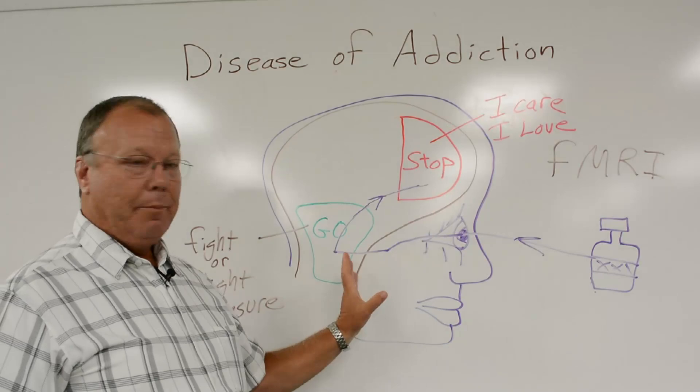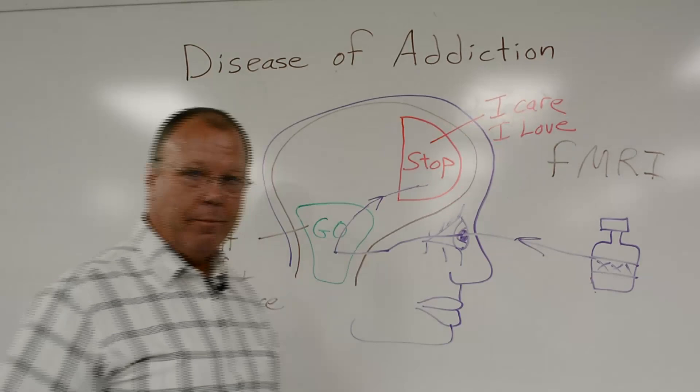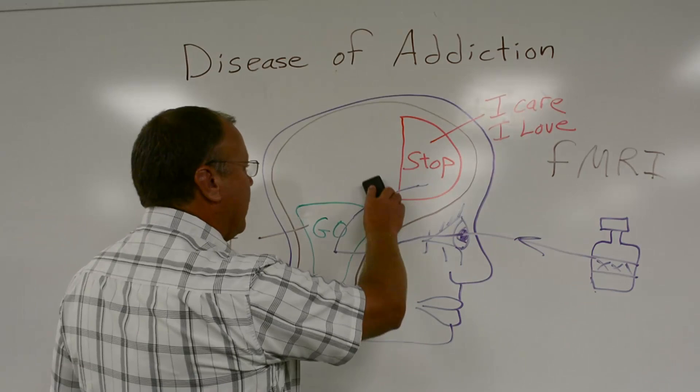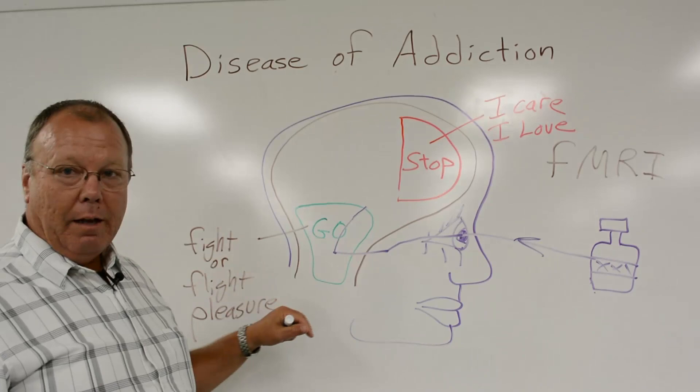Then they take an addict or alcoholic and put them in the fMRI machine. They show them the same trigger, the signal comes in through their optic nerve, this part of the brain lights up, and the addict thinks about getting high or getting drunk. But what these imaging machines show is that the signal in the brain of an alcoholic or addict never gets through — the front part of the brain never lights up. So for the brain of an alcoholic or addict, it's all go and no stop.